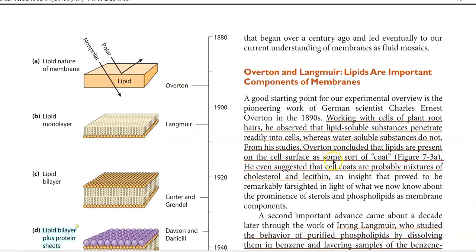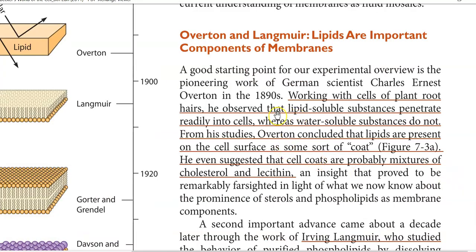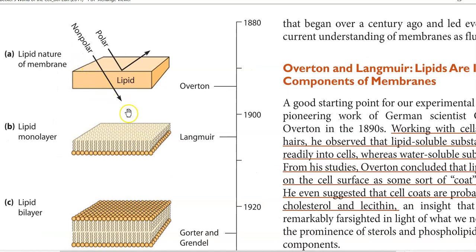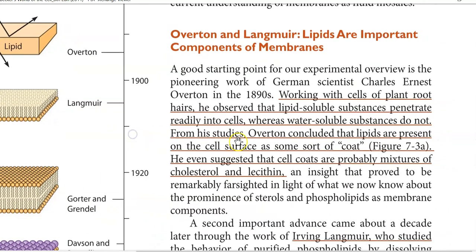The first one is the Overton and Langmuir model. When they were working on the cells of plant root hairs, they observed that lipid-soluble substances penetrate readily into the cell, whereas water-soluble substances do not. From their studies, Overton concluded that lipids are present on the surface and they form some coating. He even suggested that cell coats are probably mixtures of cholesterol as well as lecithin.